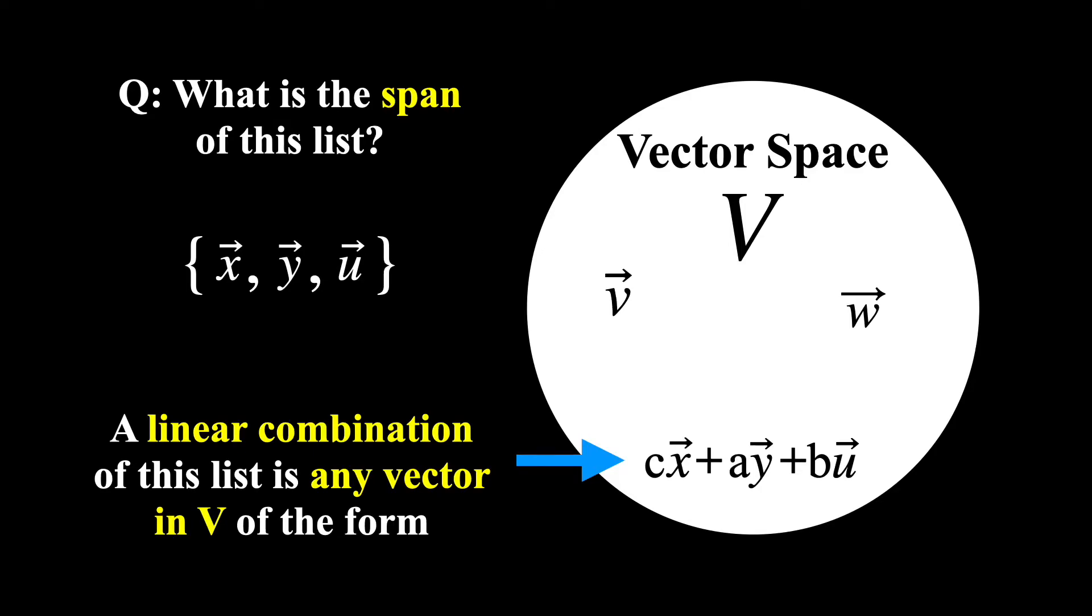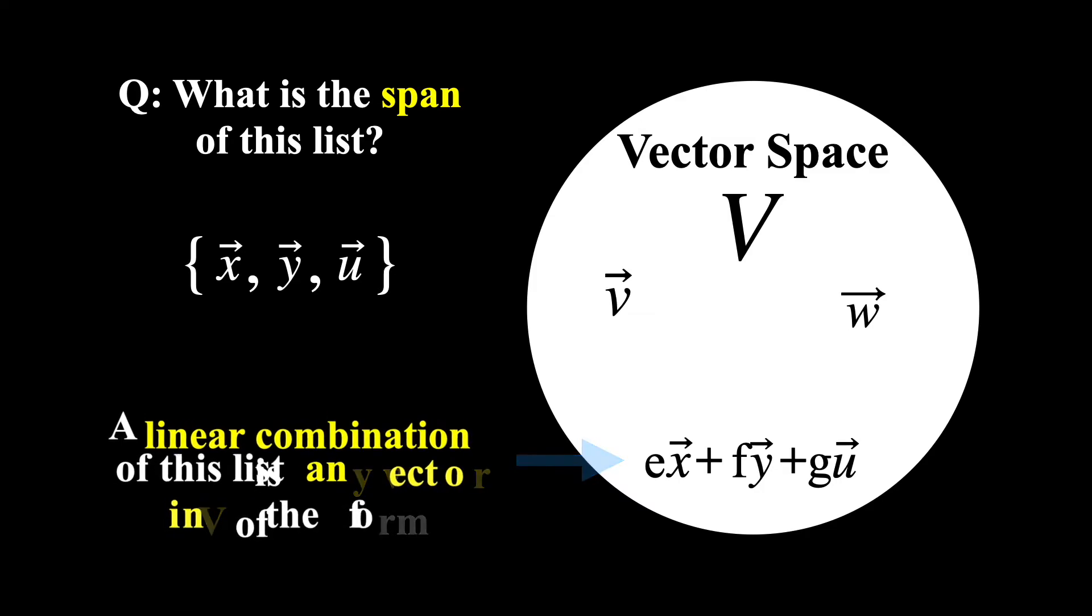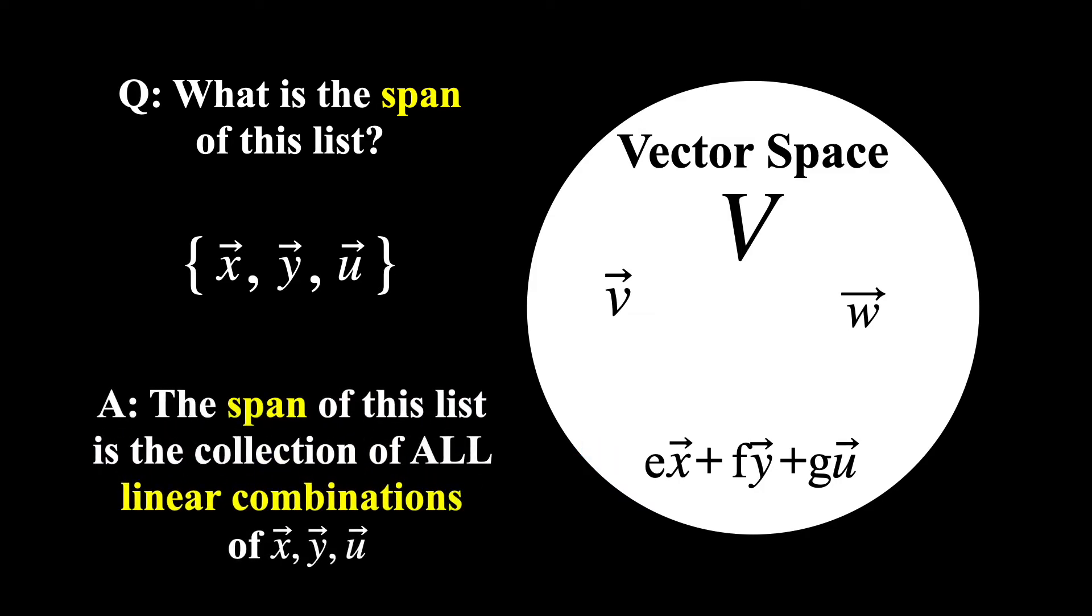And if we consider all of the different ways we can combine these vectors, not just with these field elements, but with every element from the underlying field, we end up with the span of this list. The span of this list is the collection of all linear combinations of x, y, and u.